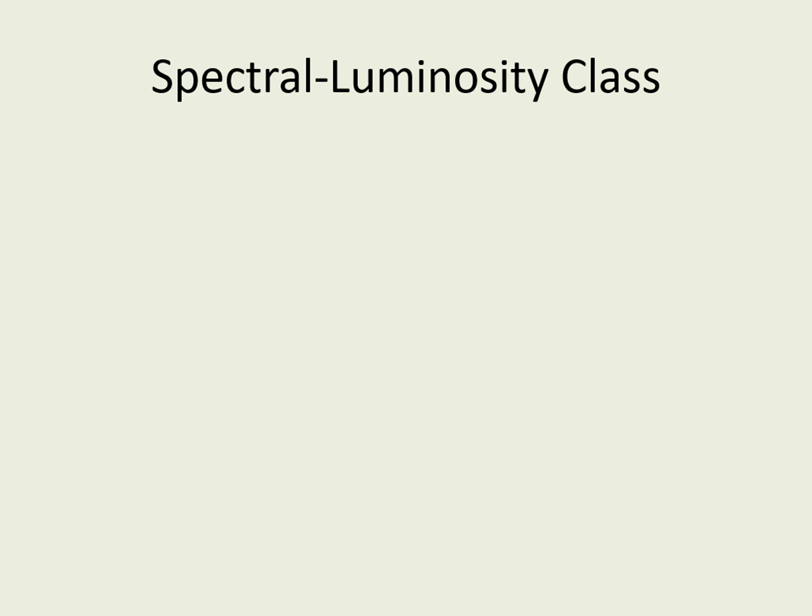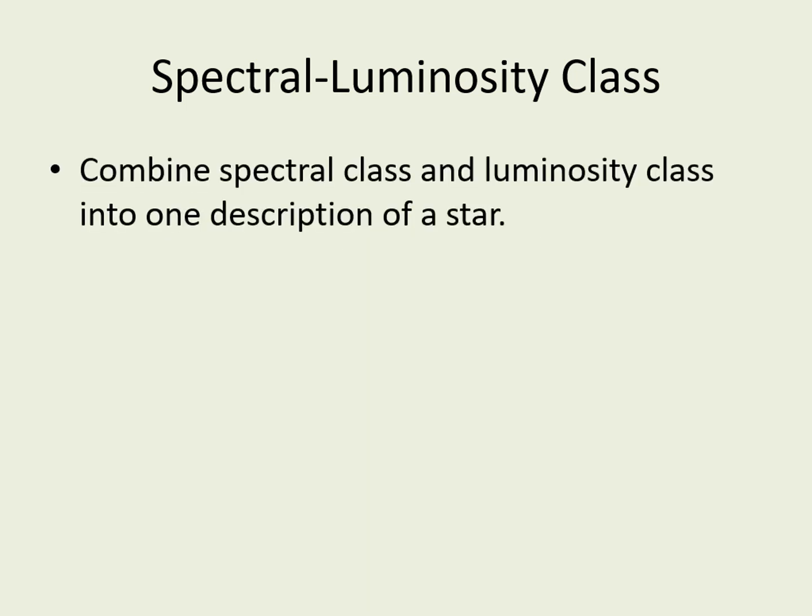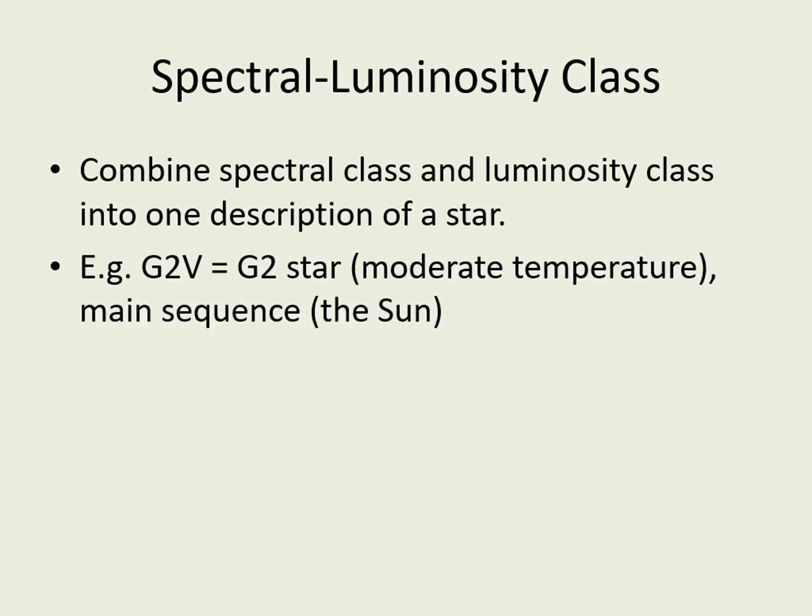So we've now seen two different ways of classifying stars: by spectral classes and by luminosity classes. Often, we list both of these together, with the spectral class first followed by the luminosity class. So, for example, the spectral luminosity class of the Sun is G2V — that means it's a moderate-temperature star (the G2) and it's a main-sequence star (the Roman numeral V).